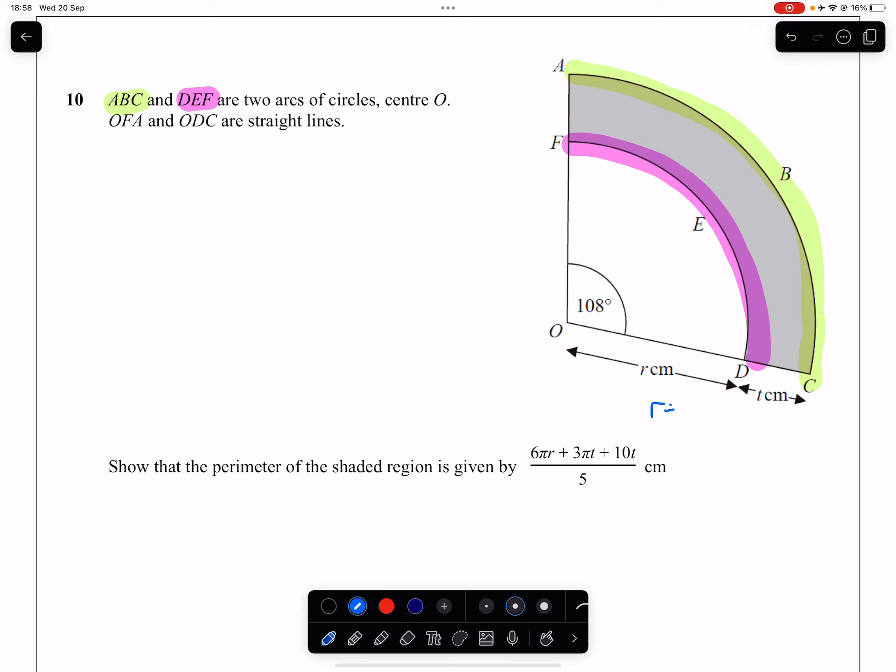So that means that the radius of the big green arc is going to be R plus T. And the question itself is asking us to show that the perimeter equals this. In other words, the question is asking us to find the perimeter of that grey shaded region. So the pink and the green arcs are going to be needed plus this length here in red plus this length here in red, which is T.